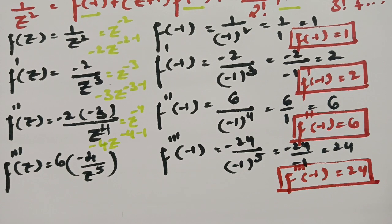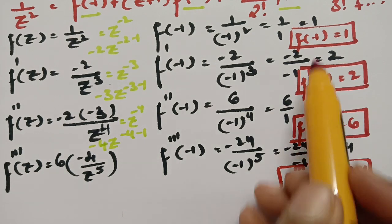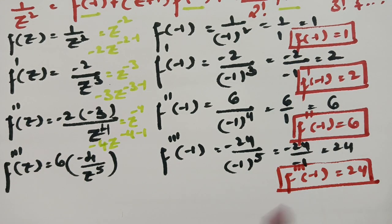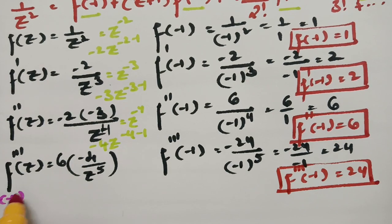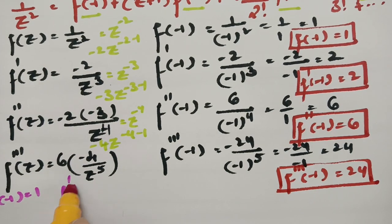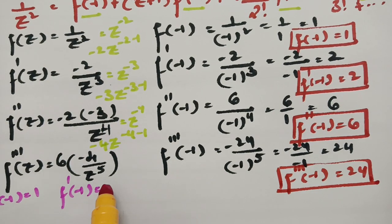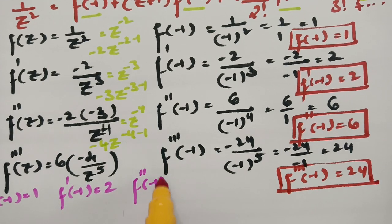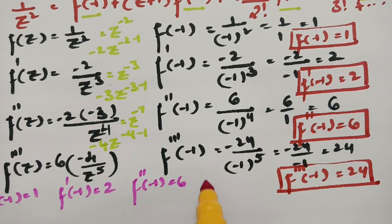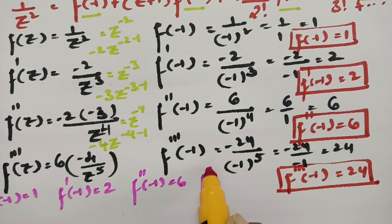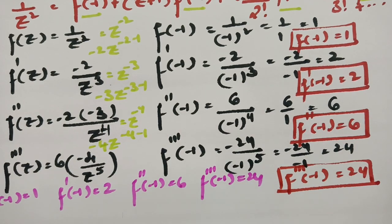We now have all the values: f(−1) = 1, f'(−1) = 2, f''(−1) = 6, and f'''(−1) = 24.